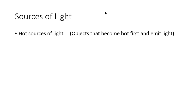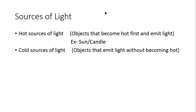Now, sources of light. There are different sources of light. Number one: hot sources of light — objects that become hot first and then emit light. Examples are the sun and candle. The second source of light is known as cold sources of light — objects that emit light without becoming hot. Examples are LED bulbs and fluorescent lights.